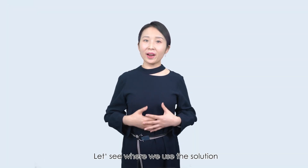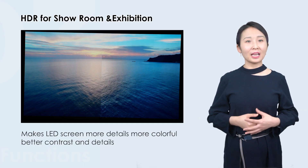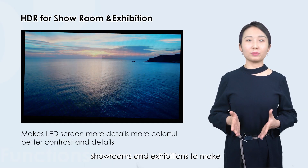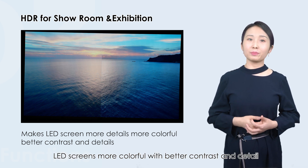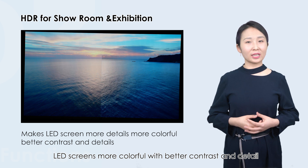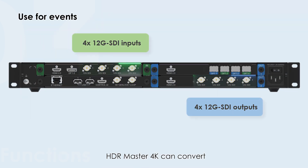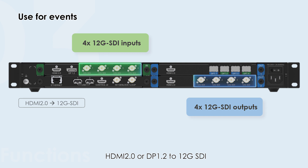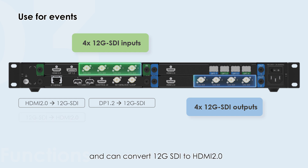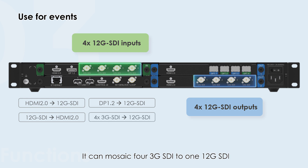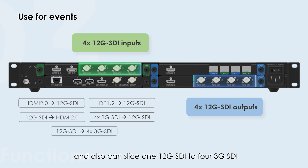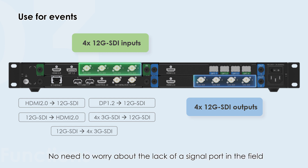HDR Master 4K is used in showrooms and exhibitions to make LED screens more colorful with better contrast and detail. HDR Master 4K can convert HDMI 2.0 or DP 1.2 to 12G-SDI and convert 12G-SDI to HDMI 2.0. It can mosaic four 3G-SDI signals to one 12G-SDI and also slice one 12G-SDI to four 3G-SDI. No need to worry about the lack of a signal port in the field.